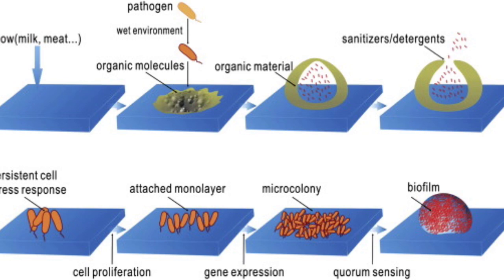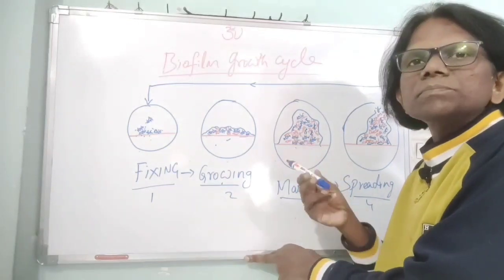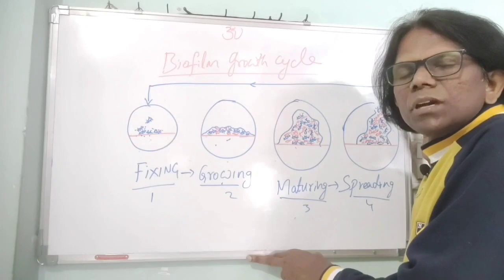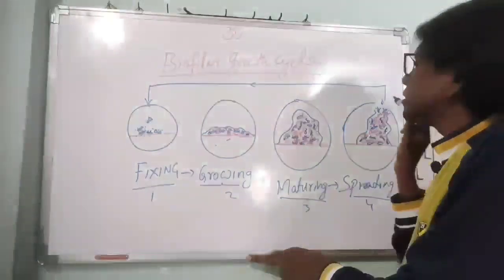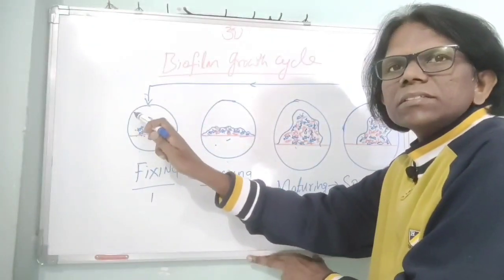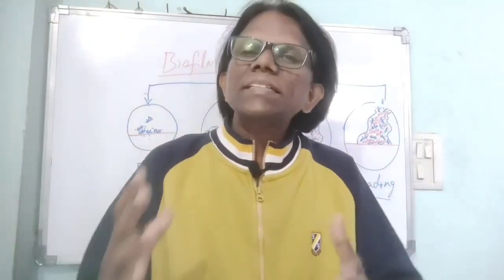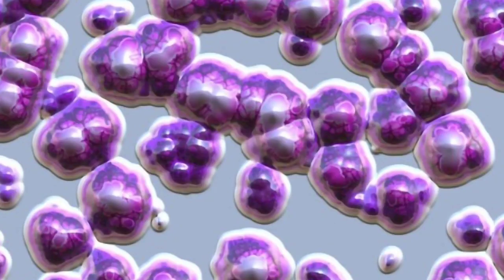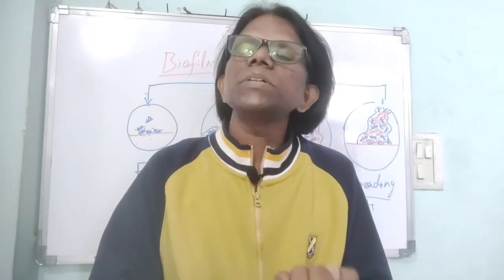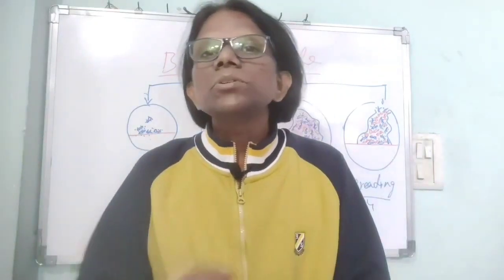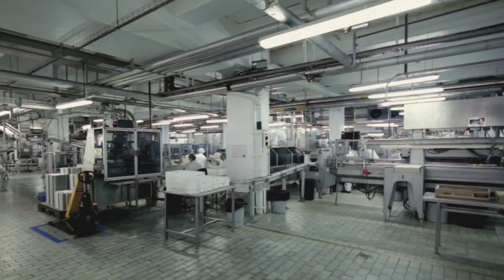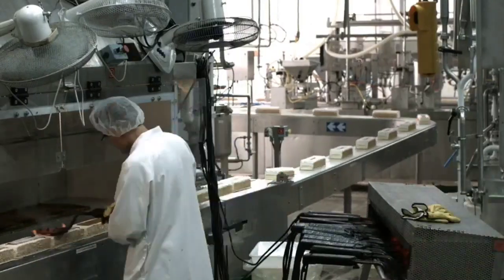The third stage is maturation: bacterial cells grow and proliferate rapidly in an exponential phase within the biofilm. The fourth stage is spreading: the biofilm disperses its EPS matrix and spreads across food contact or adjacent surfaces, restarting the cycle. The bacteria most commonly found in biofilms are slime-producing species including E. coli, Pseudomonas, Yersinia, Campylobacter jejuni, Salmonella typhi, Salmonella species, and Listeria species.